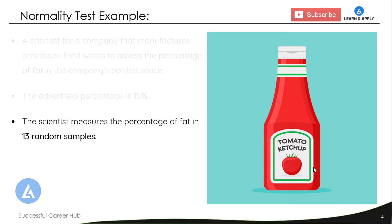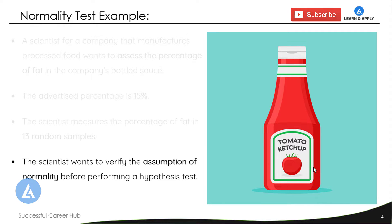A scientist measures the percentage of fat in 13 random samples. The scientist wants to verify the assumption of normality before performing any hypothesis testing.